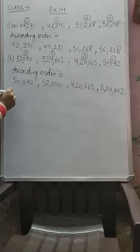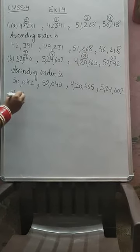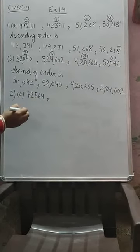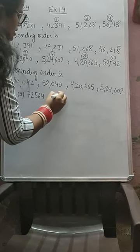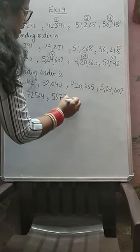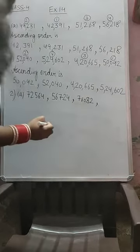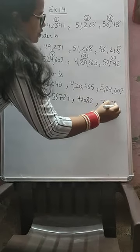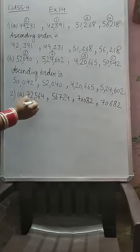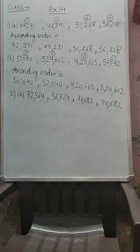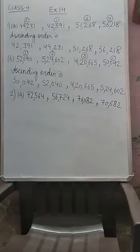Now coming to Question 2. We have to arrange in descending order. Part A numbers are: 72,564, then 56,724, then 76,082, and then 70,682. We will mark the commas. We have to arrange in descending order.